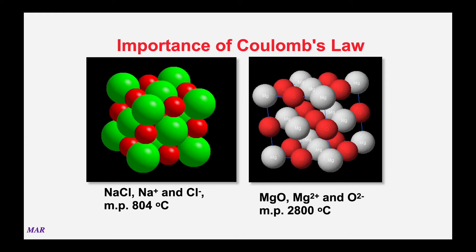However, magnesium oxide, with a positive two, negative two—you've got that double handshake going on—is much harder to break apart. If you wanted to melt magnesium oxide, you'd need 2800 degrees Celsius, a heck of a lot higher than sodium chloride. So a positive two, negative two is an even stronger handshake. If we had a positive three, negative three compound, that would be higher yet than 2800 degrees. All the atoms here are about the same size, so we'll talk more about sizes in a future lecture.